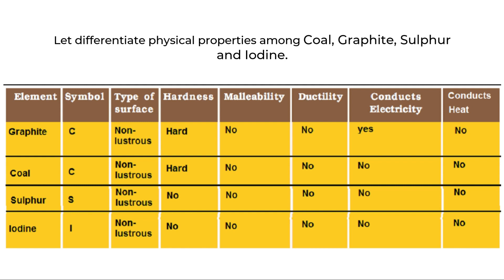Graphite is also an exception regarding electricity, and we will learn about contradictions and exceptions shortly. Regarding conducting heat: graphite, coal, sulphur and iodine do not conduct heat. This means that the molecules of these non-metals do not transfer heat from one molecule to another.